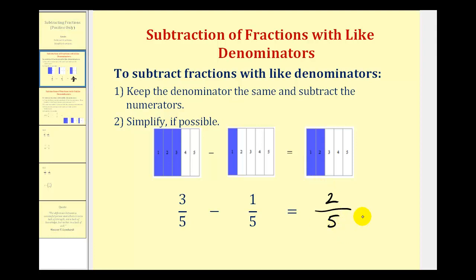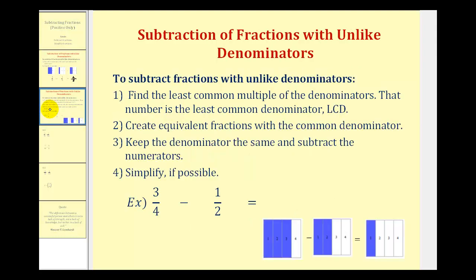It's important to remember that in order to subtract fractions, we must have a common denominator so that the pieces we're subtracting are the same size. So if we have fractions with different or unlike denominators, we must first find the least common multiple of the denominators. This is called the least common denominator, or LCD. Once we find the LCD, we create equivalent fractions with the common denominator, keep the denominator the same, subtract the numerators, and then simplify if possible.